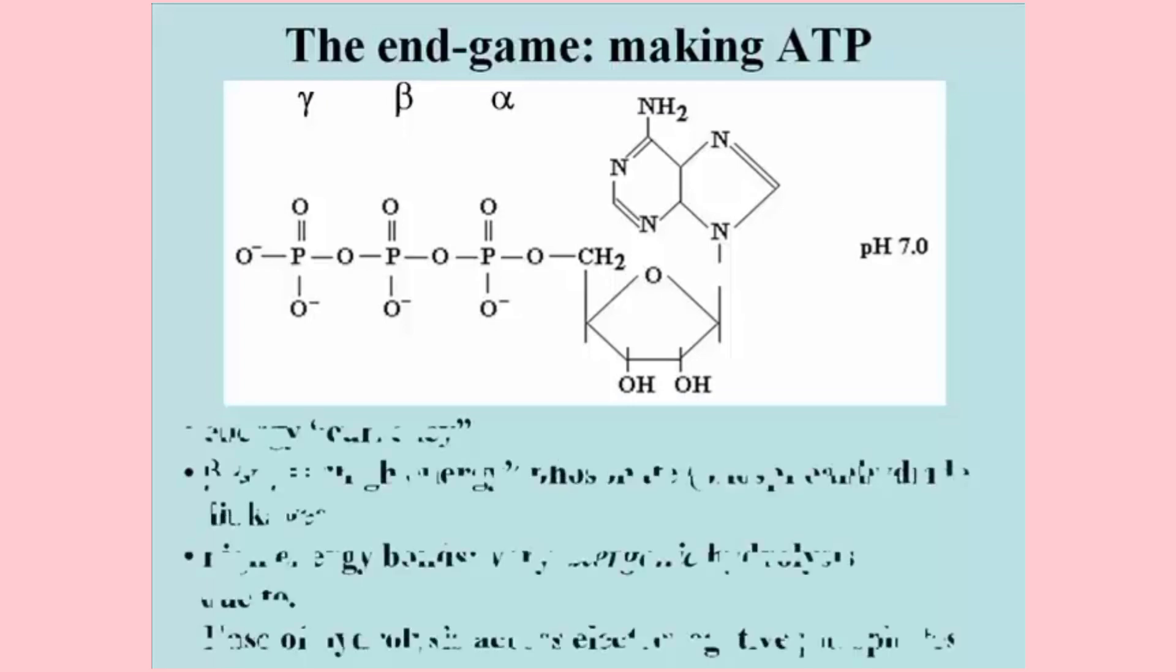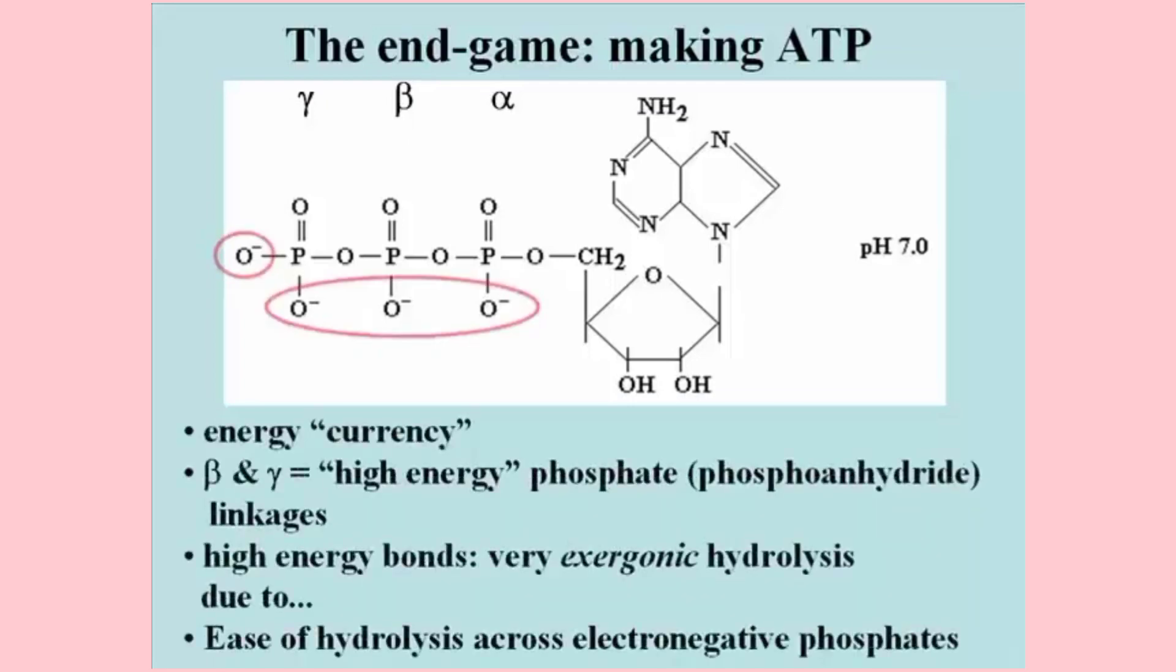ATP is the energy currency of life. Its phosphoanhydride linkages release a lot of free energy when hydrolyzed, which is why we usually call ATP a high energy phosphate compound and we call the phosphoanhydride linkages high energy bonds.